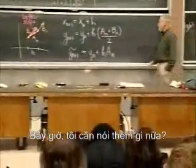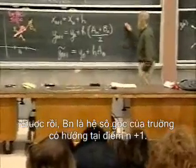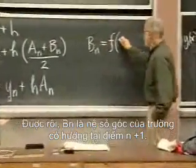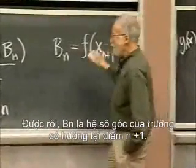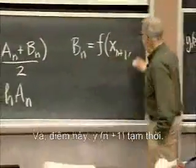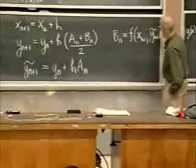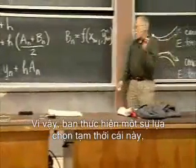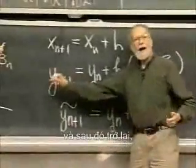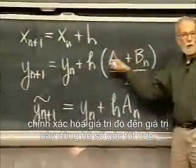Now, I didn't tell the computer what B_n was. B_n is the slope of the direction field at the point X_{n+1} and Y_{n+1} temporary. So you make a temporary choice, calculate that number, and then go back and — as it were — correct that value to the final value by using this better slope.